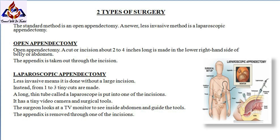In an open appendectomy, a cut or incision about two to four inches long is made in the lower right-hand side of the belly or abdomen, and the appendix is taken out through the incision.